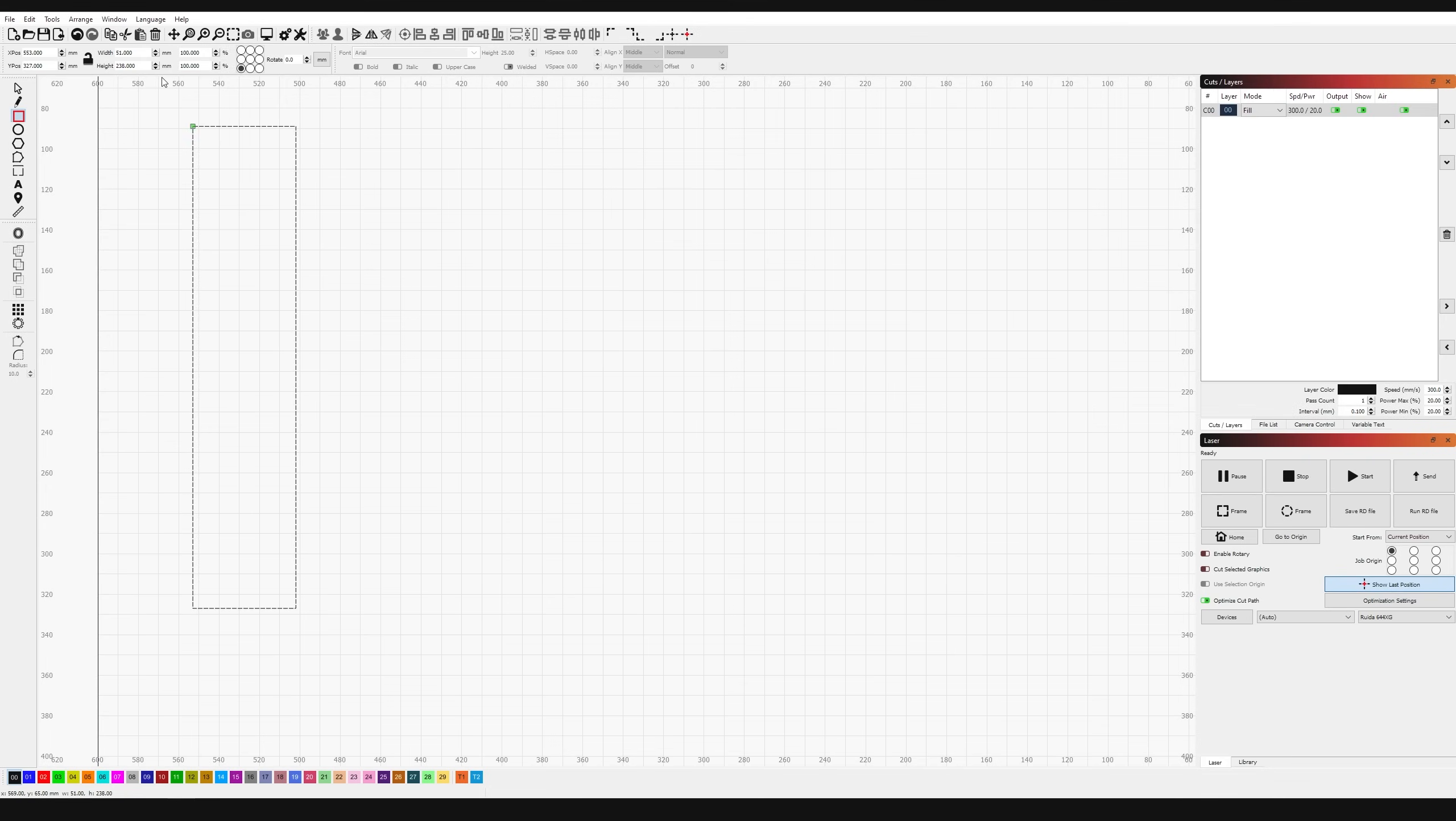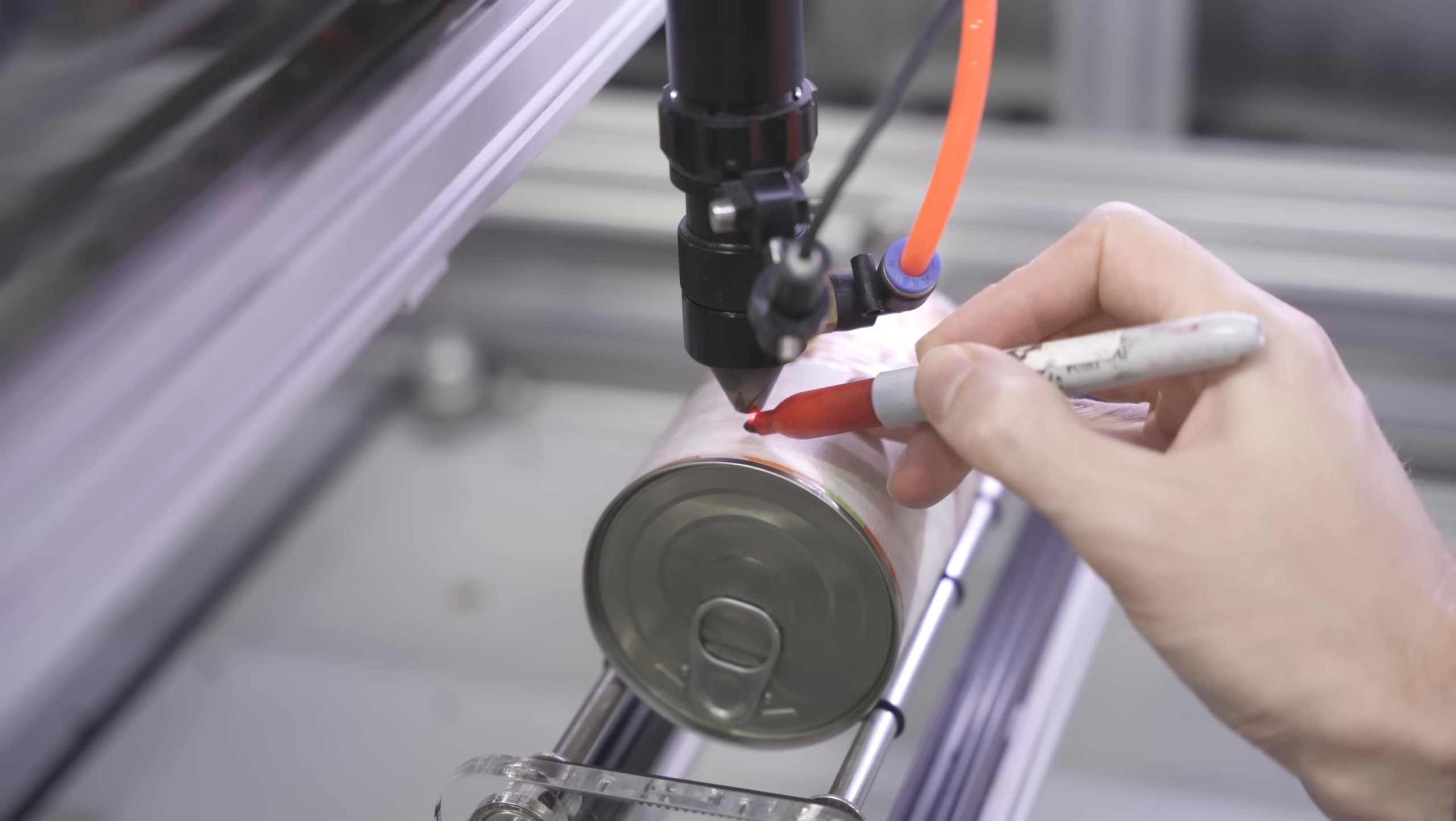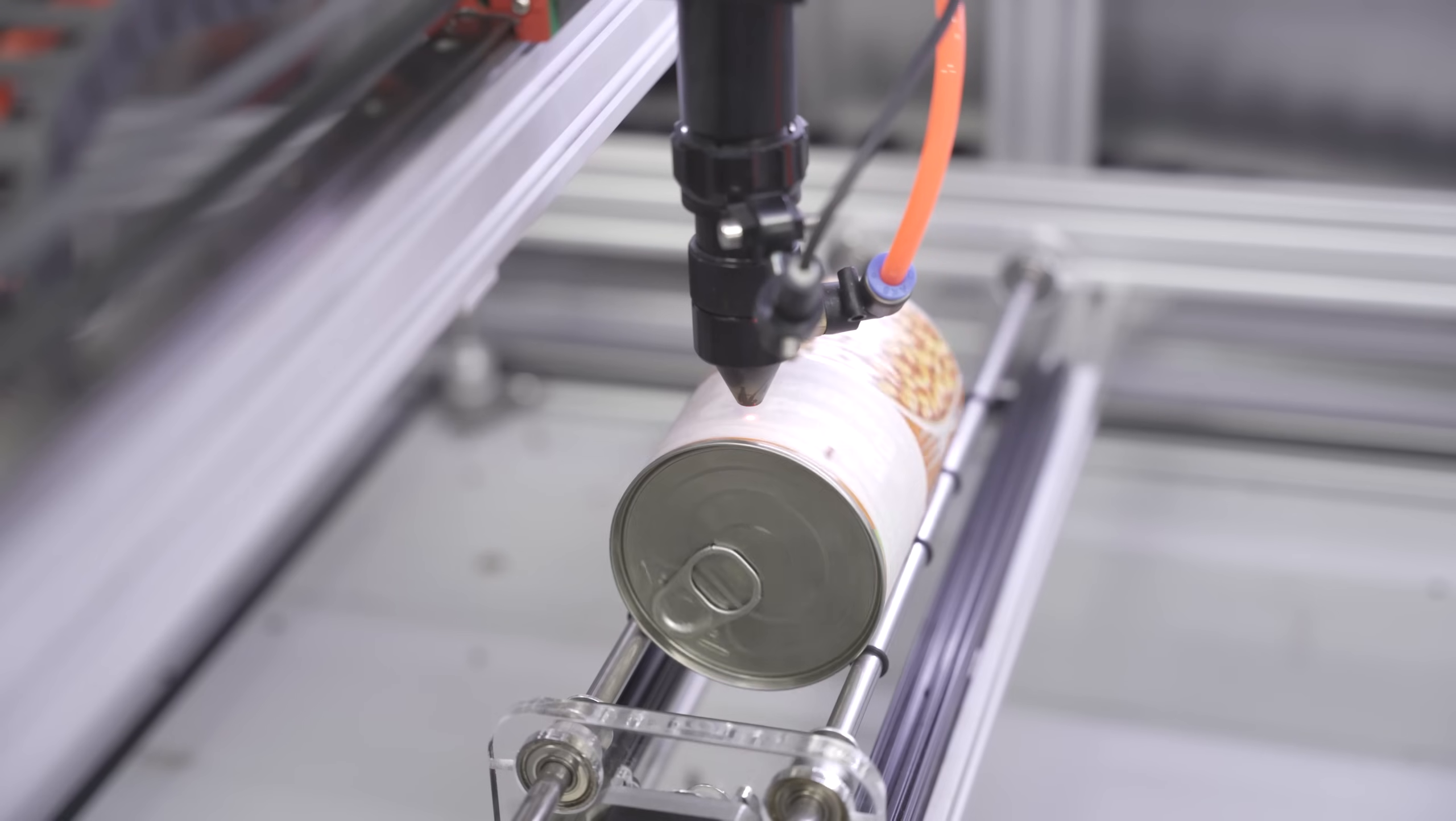And just to confirm it's doing what it says it's doing, I'll send a rectangle to the machine that's the same length as the circumference. So if I mark a line here where it starts, it should spin one full rotation and back again.